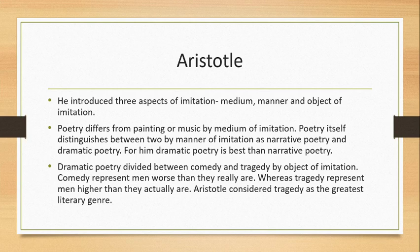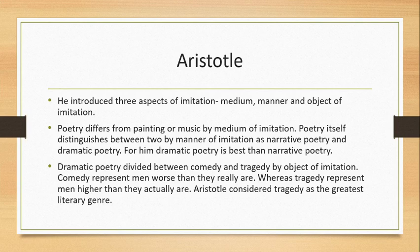The second aspect is the manner of imitation. Poetry itself is divided into narrative poetry and dramatic poetry. In narrative poetry, the poet simply narrates — for example, describing a king, his queens, children, and a monster. In dramatic poetry, that narrated story is actually performed and watched, such as on a theater stage or screen. So the manner differs: narration versus action performed before an audience.